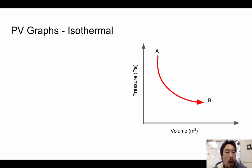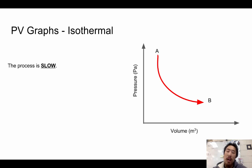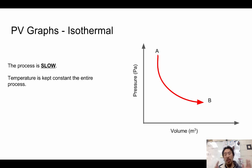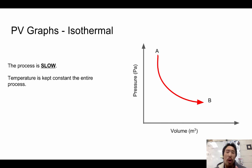Next we have the isothermal curves, which look like a curved line on the PV graph. The important thing is that the isothermal process is slow — it must occur over an extended, controlled period of time, because if it doesn't, it becomes an adiabatic process. The temperature is constant the entire time, maintained by adjusting either the pressure or the volume and then allowing the system to approach the desired temperature, over and over, so that you get a nice isothermal curve.